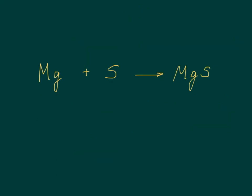Let's look at an example. We'll go ahead and assign oxidation numbers. Magnesium is an element, so zero. Sulfur is also an element, so zero. In the product, magnesium is plus two, and sulfur is minus two.